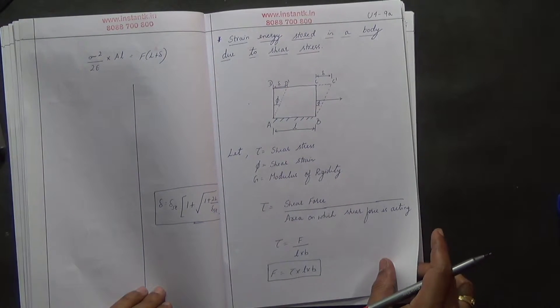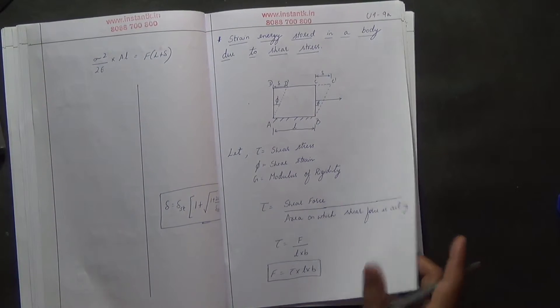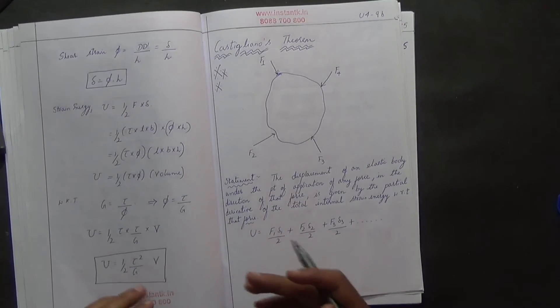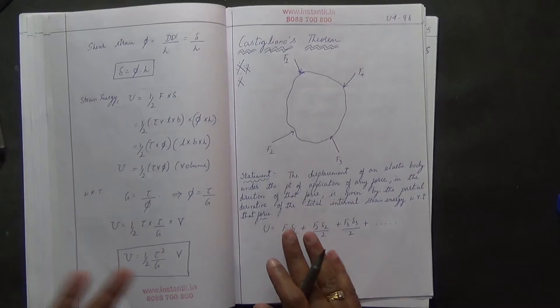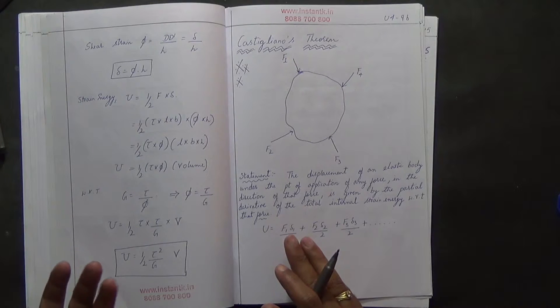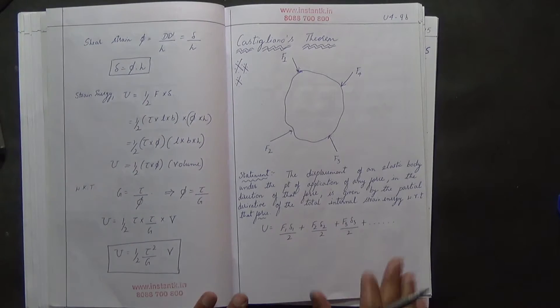For strain energy stored in a body due to shear stress, figures are provided showing what tau, phi, and g are. Sometimes, if it is very important, the derivation has been done by the lecturer in the worksheet. If not, you must rewrite key points by watching the video to complete the worksheets.